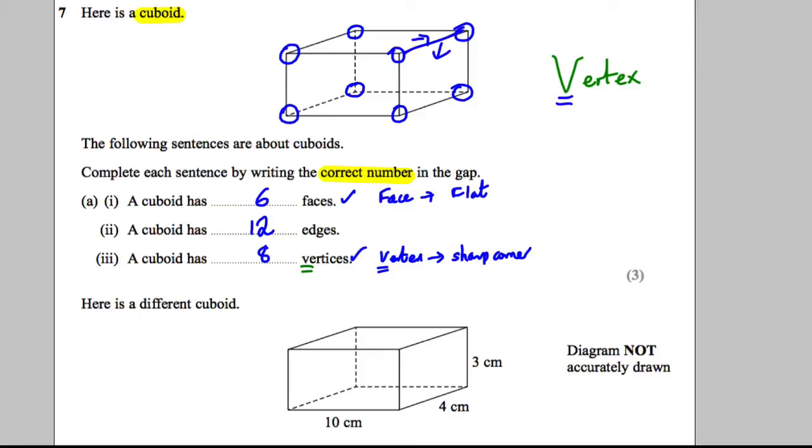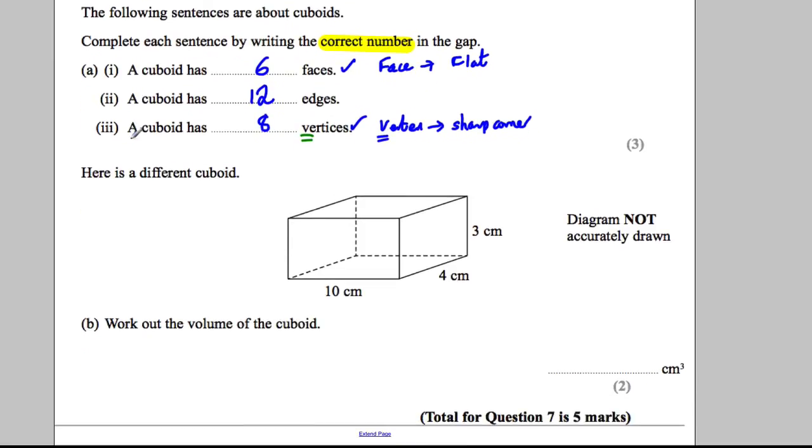Below here is a different cuboid. So what we've got here is the width of the front face being 10, the height of the front face being 3, and the depth of the cuboid being 4. Now you should know in your formula booklet you're told that the volume of a prism has a picture of a prism. It says if you work out the area of the front face and you multiply that by how far back the shape is, that gives you the volume.